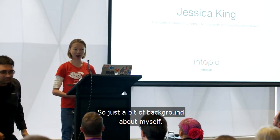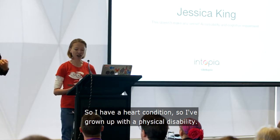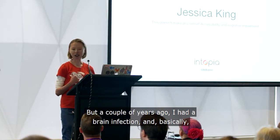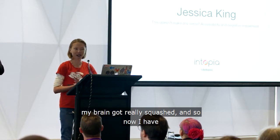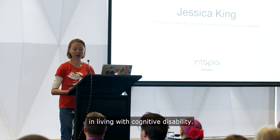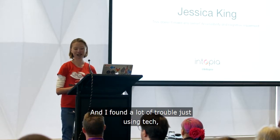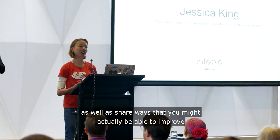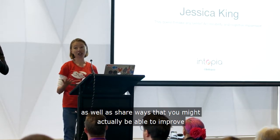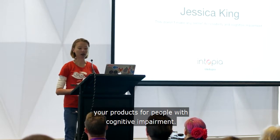So just a bit of background about myself. I have a heart condition so I've grown up with a physical disability. But a couple of years ago I had a brain infection and basically my brain got really squashed. And so now I have a lot of cognitive impairments. It's been a bit of a crash course in living with cognitive disability. And I found a lot of trouble just using tech, so I thought I would share my experiences as well as ways that you might actually be able to improve your products for people with cognitive impairment.